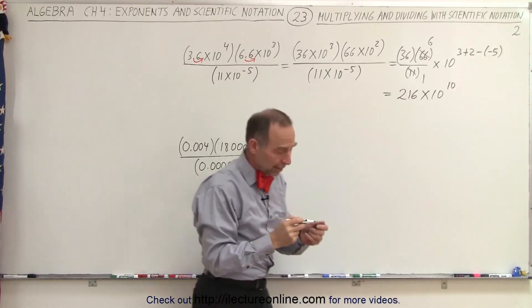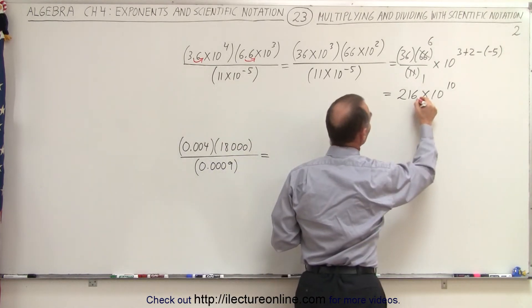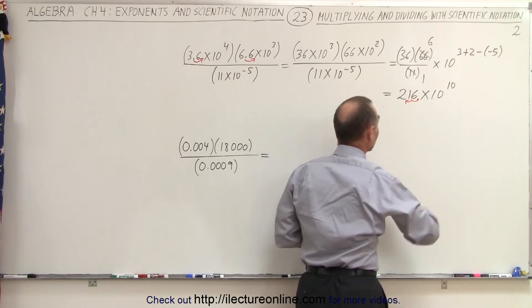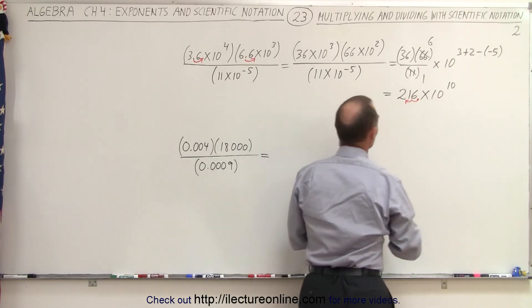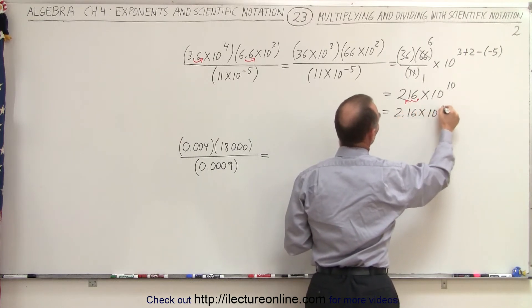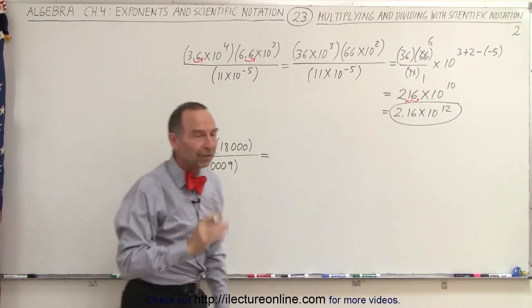Now again, we're going to adjust this so we can put it into the standard form. We need to move the decimal place over to the left two places like this, which means we're going to add 2 to the exponent. So this becomes equal to 2.16 times 10 to the 12th power. And that's the most simplified form of that expression.